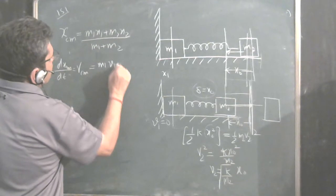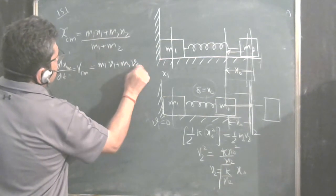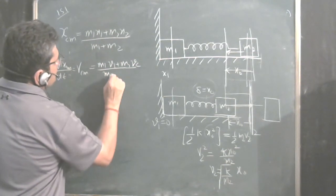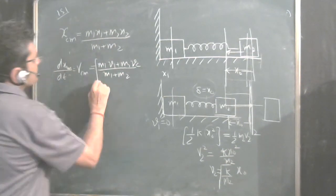M1 v1 plus M2 v2 upon M1 plus M2. This is the general equation.